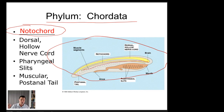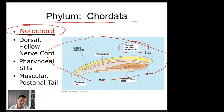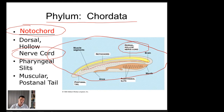People sometimes confuse the notochord and the dorsal hollow nerve cord because they're close together, but they're not the same thing. The dorsal hollow nerve cord is just like it sounds — a hollow space through which, in humans, the spinal cord runs. The notochord is the long flexible rod; the dorsal hollow nerve cord is the space where the nervous system runs the length of the animal.